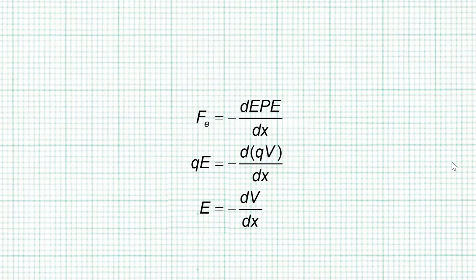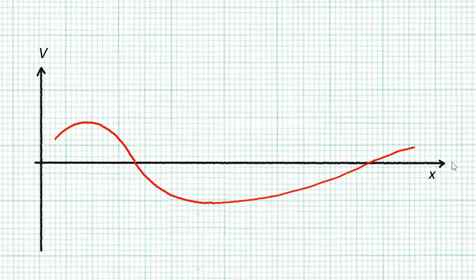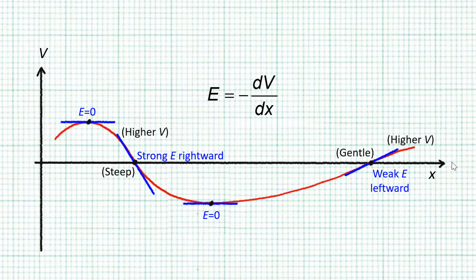If we divide both sides of the equation by Q, we get a relationship between potential and field strength. Again, if we are given a graph of how the electric potential of an electric field varies along a line, we can figure out how the electric field strength varies along this line.